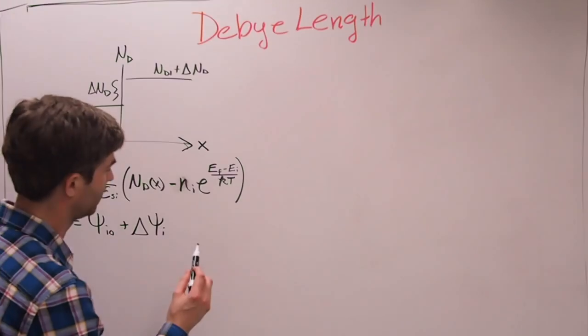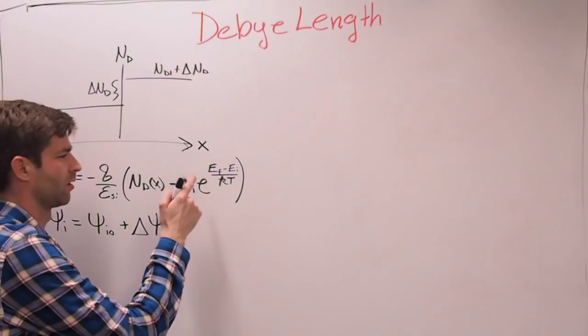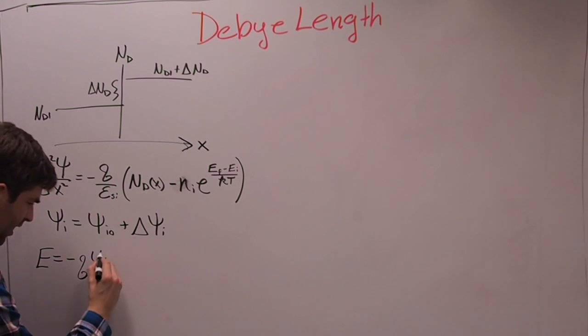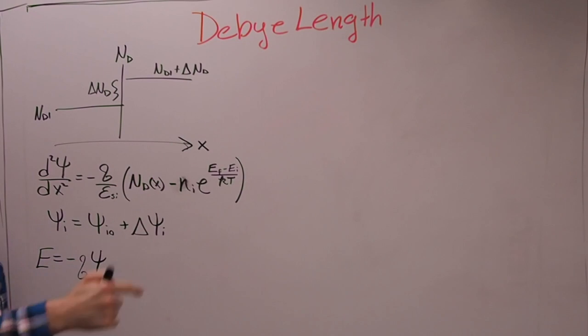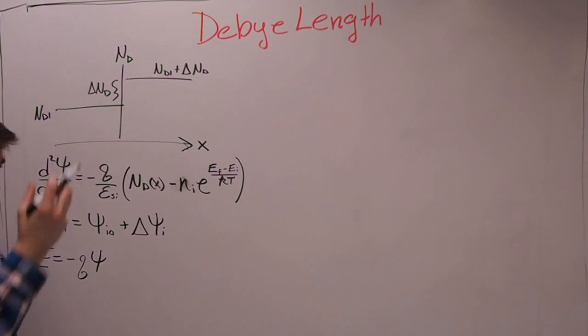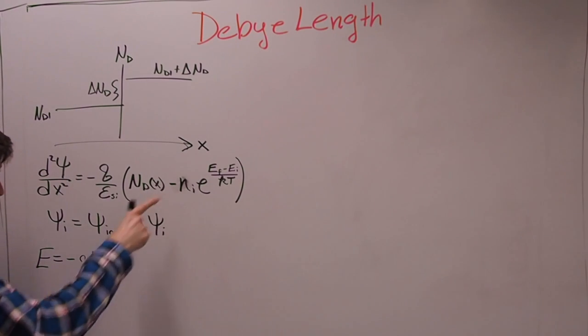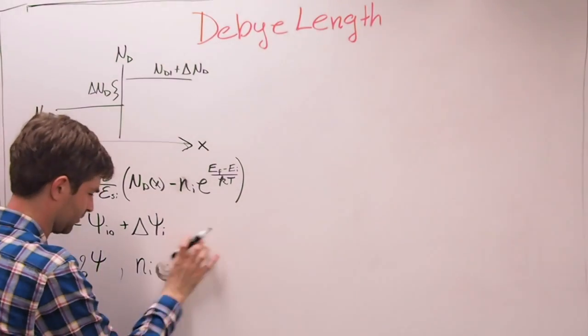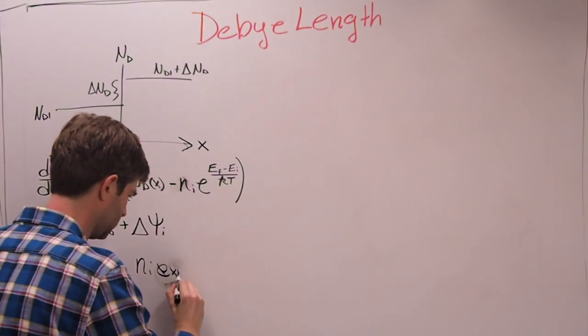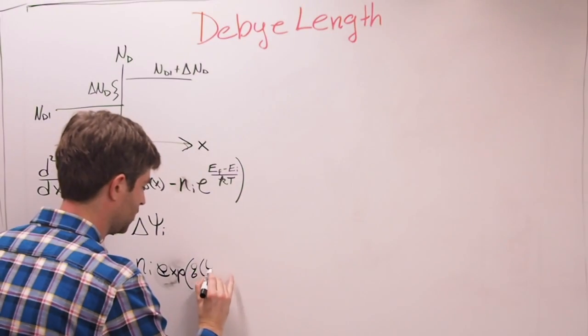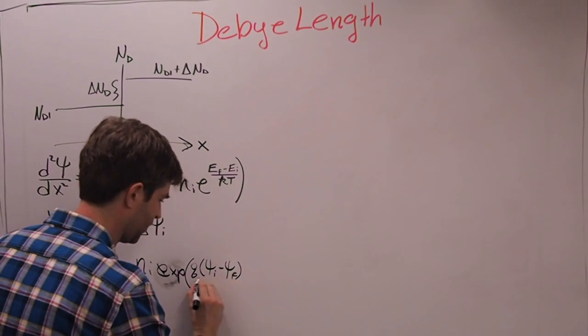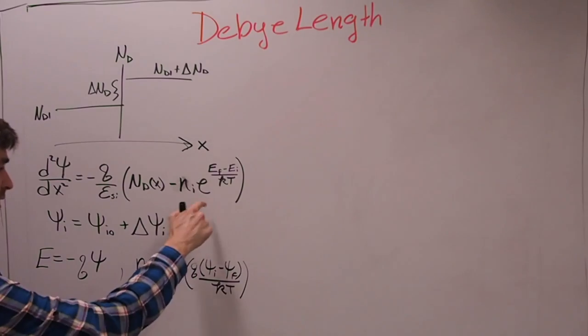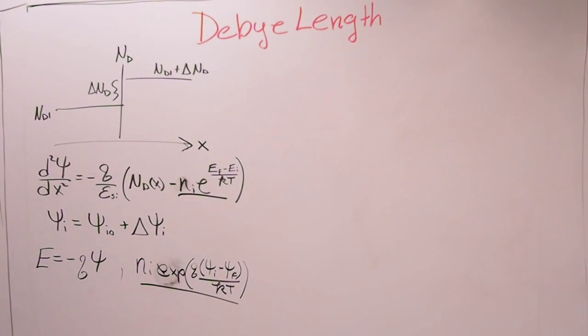So let's change these terms up a little bit. Instead of writing this in terms of energy, I'm going to write this in terms of a potential. And we remember from before that E is equal to negative q phi. This is the kinetic energy of an electron, which is what our energy band diagrams are always drawn as.